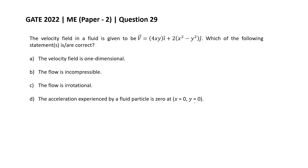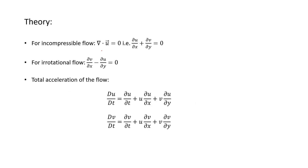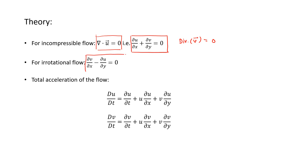Let's look at the concepts we need to know to solve this question. For incompressible flow in two dimensions, the divergence of the velocity field should be equal to 0, meaning ∂u/∂x + ∂v/∂y = 0. For irrotational flow in two dimensions, the curl of the velocity field should be equal to 0, which translates to ∂v/∂x - ∂u/∂y = 0. If this condition is satisfied, the flow is irrotational.